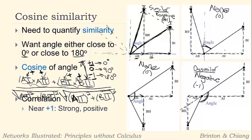So now, correlation, as we said, it could be near plus one, which means it's strong and positive, near zero, which means there's no correlation, or near minus one, which means it's strong and it's negative.